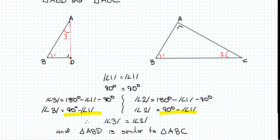We also know that angle 3 must equal angle 2. Angle 3 equals 180° minus angle 1 minus 90°, and angle 2 equals 180° minus angle 1 minus angle 2 — which leads us to confirm that angle 3 equals angle 2. So since angle 3 equals angle 2, angle 1 equals angle 1, and 90° equals 90°, we know they are similar triangles, and with similar triangles we can use ratios.